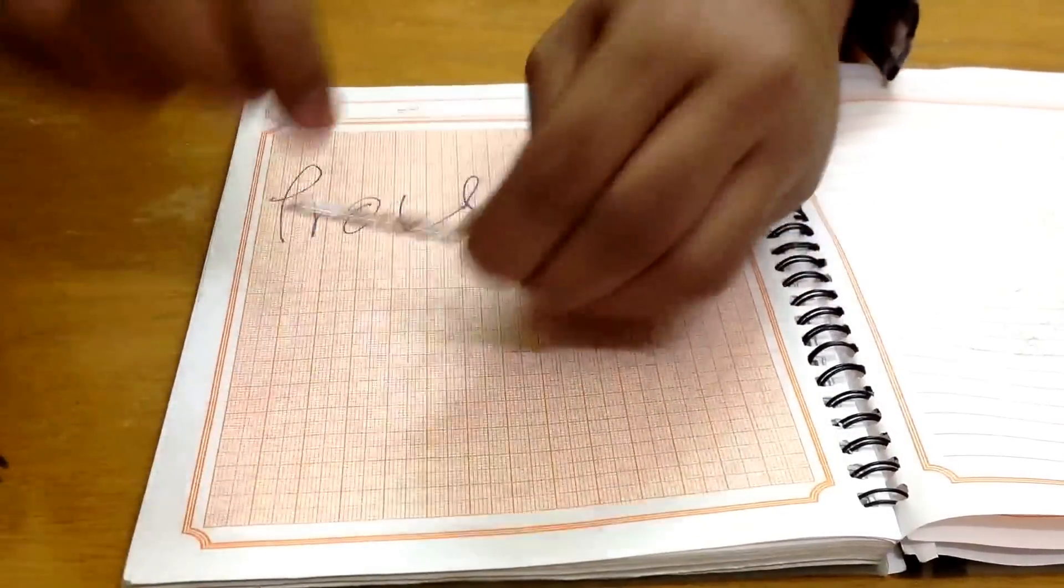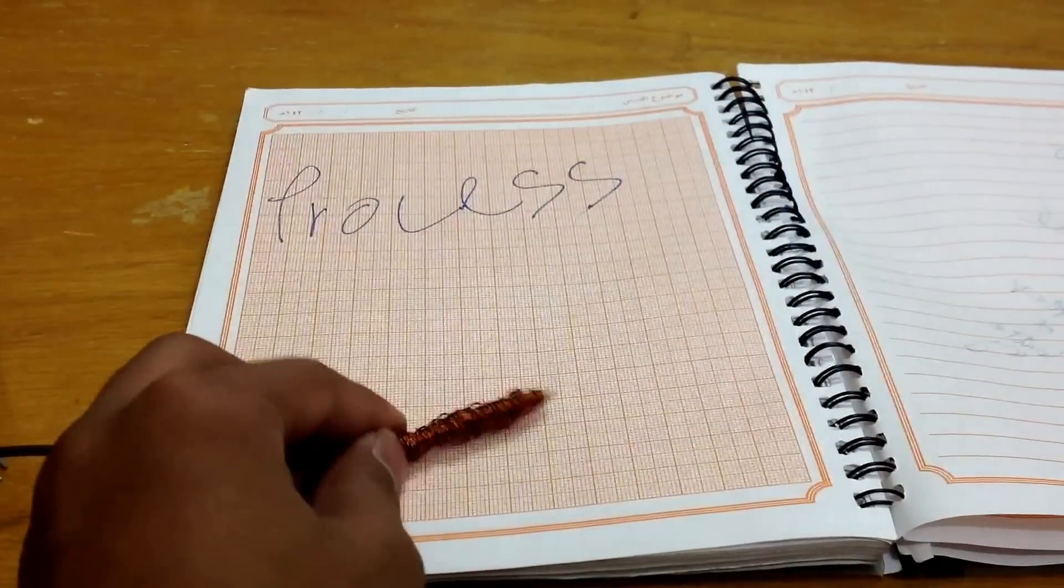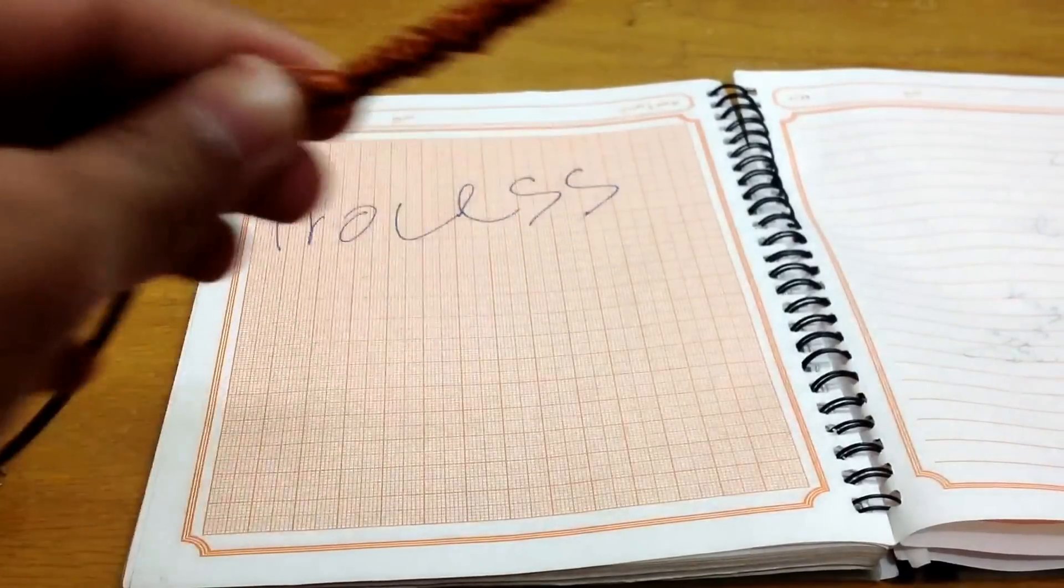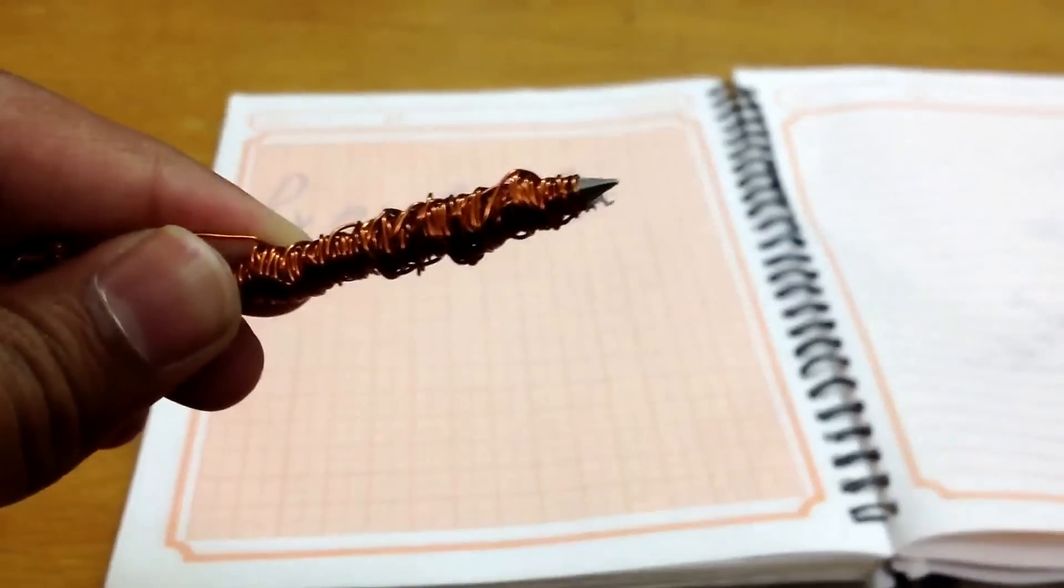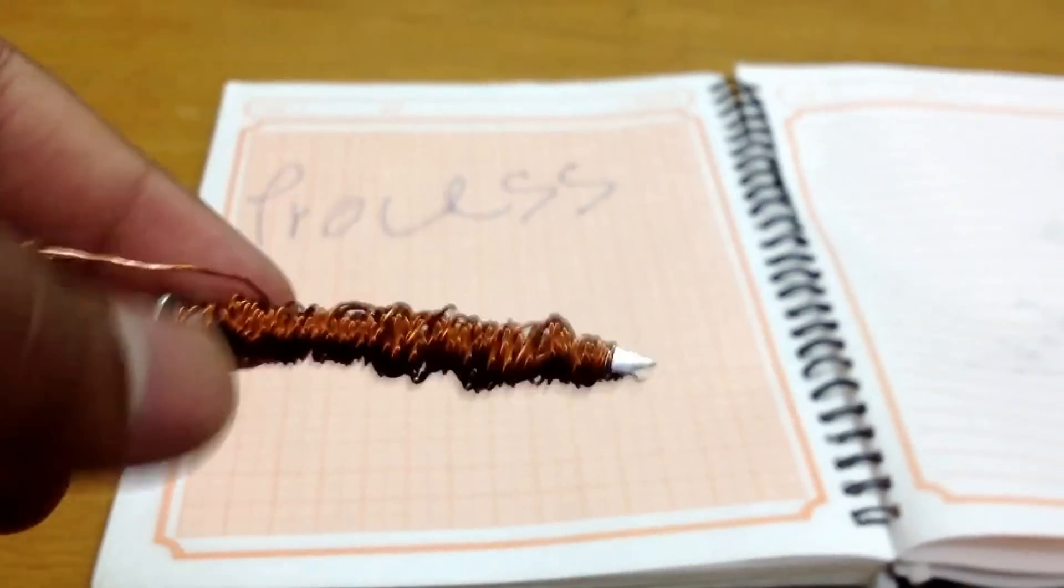So, after you have completed doing that, it might look like this. The more the coils, the better the magnetic effects.